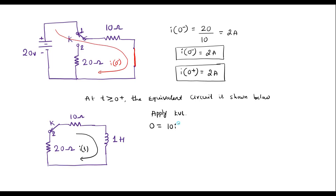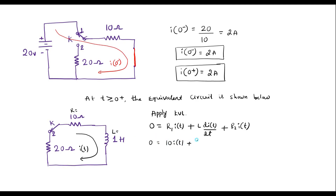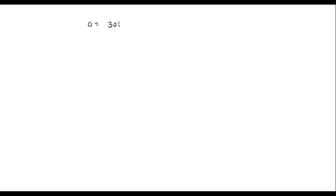There is no voltage source. The drop across the 10 ohm resistor is 10 times I of t, plus the voltage drop across the inductor is L times di(t)/dt, plus the drop across the 20 ohm resistor is 20 times i(t). Substituting values — R1 is 10, L is 1, and R2 is 20 — the equation simplifies to: 0 equals 30 i(t) plus di(t)/dt.